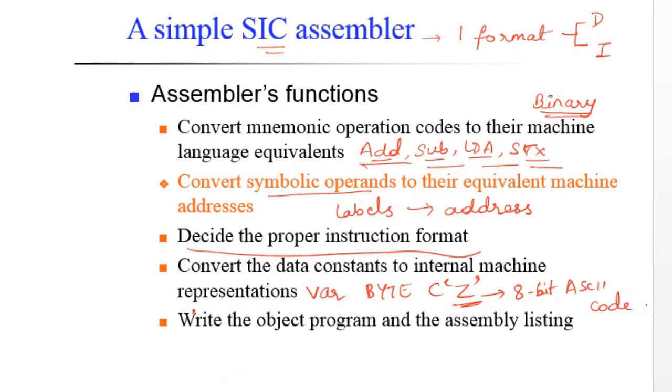And finally, after all these four steps are done, we are writing the object program and the assembly listing, which are two forms of outputs generated by the assembler.